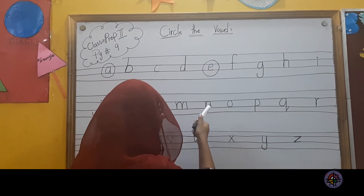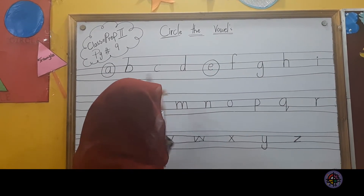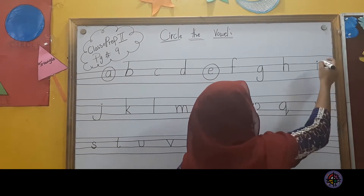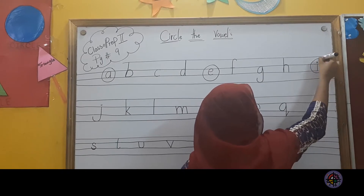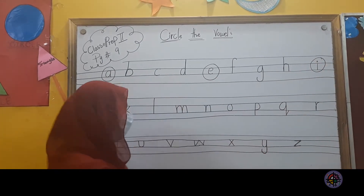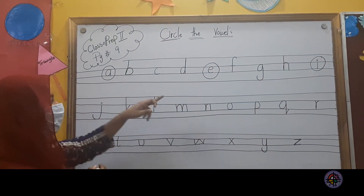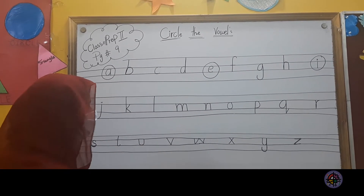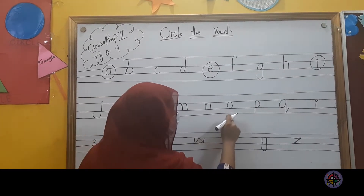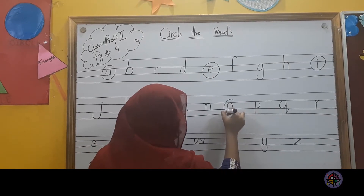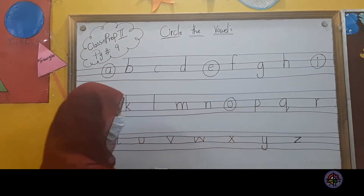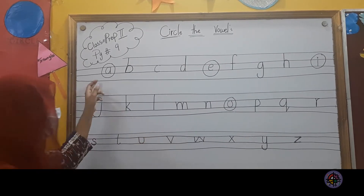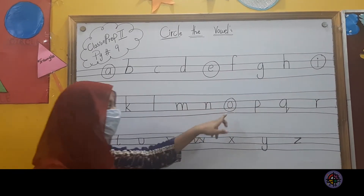Now we will circle here in the third column: A, E, I. Now we will circle here. We circle here with A, E, I. Now we will check where O is — and that is O.